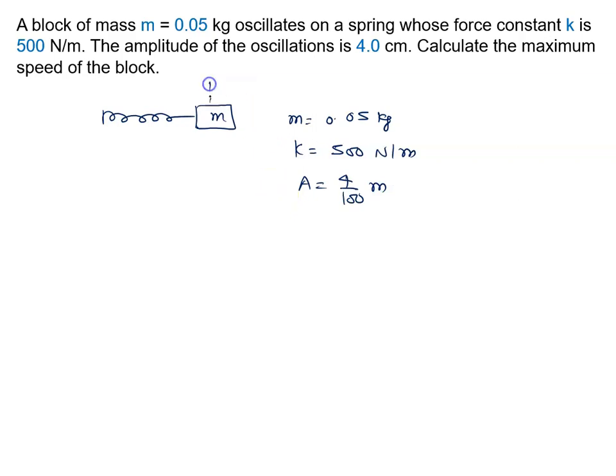Suppose this block is doing the oscillation from extreme to mean position, then again to the extreme position. This is the extreme position, let's say this displacement. We know it is amplitude A. So here the energy, the potential energy in mean position, the whole potential energy converts to kinetic energy. Total energy at this point P equals total energy at point Q.